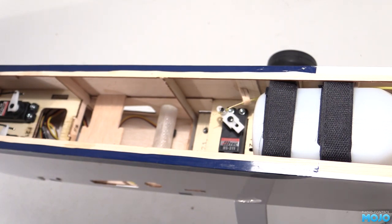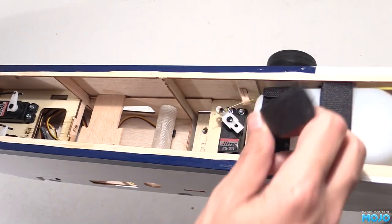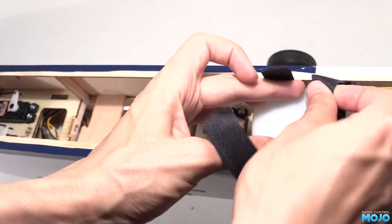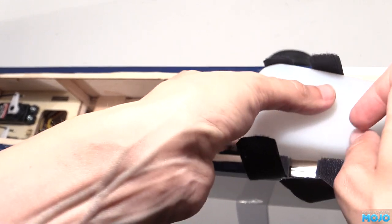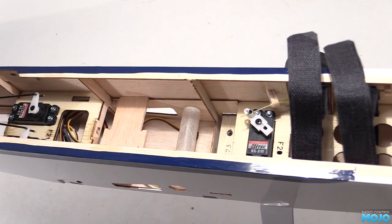Surprisingly to balance the model the battery wants to sit under the fuel tank. This of course means the tank has to come out. With such an open top to the fuselage and velcro straps it's really easy to remove. Nice.